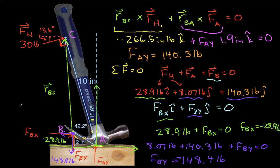We decided this was 28.9 pounds. So we have then that FB is minus 148.4 pounds i-hat minus 28.9 pounds j-hat. The magnitude of FB turns out to be 151.2 pounds.